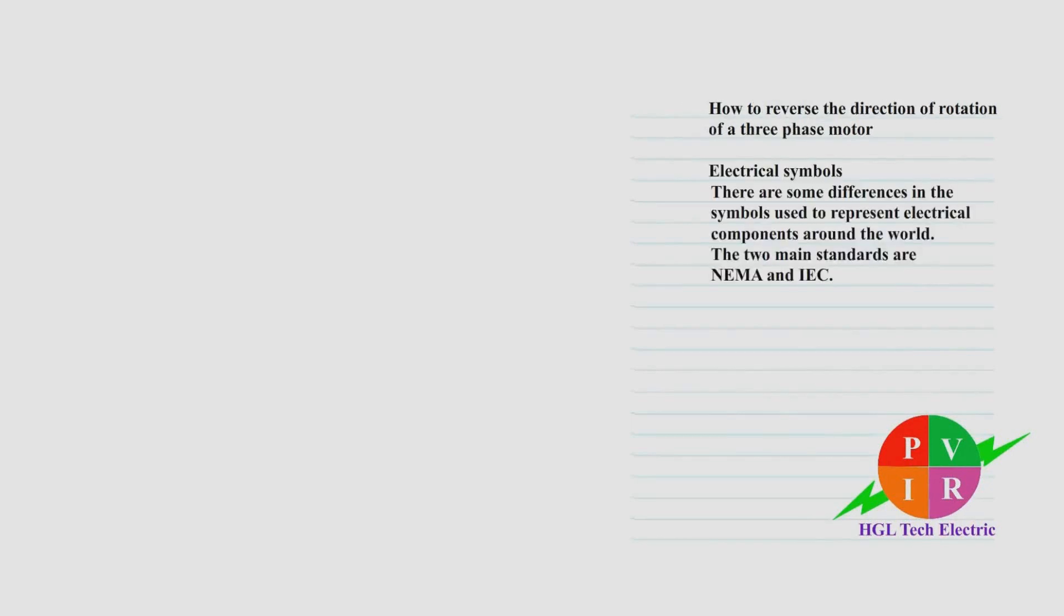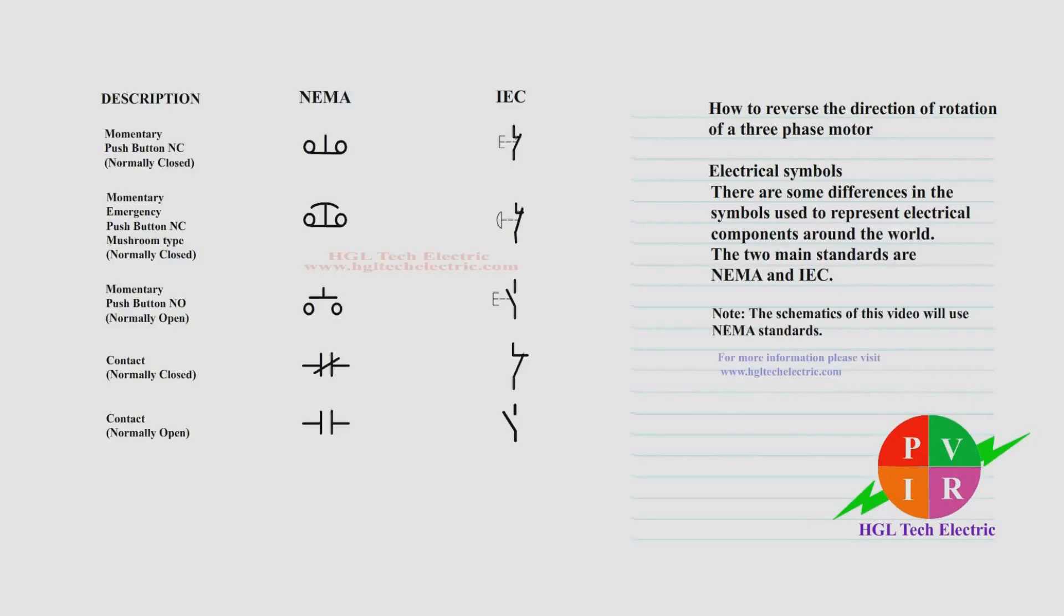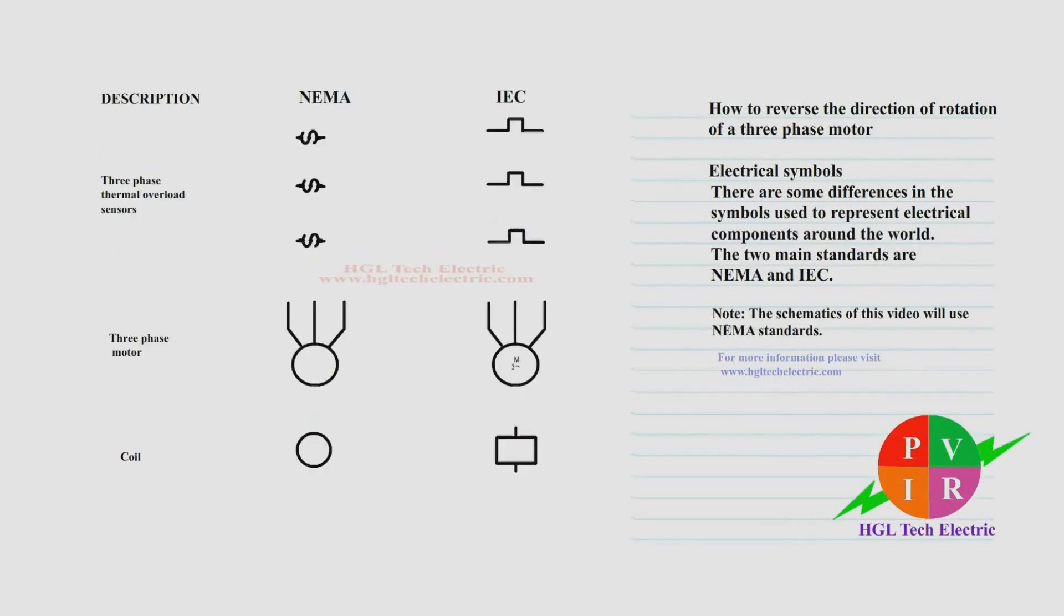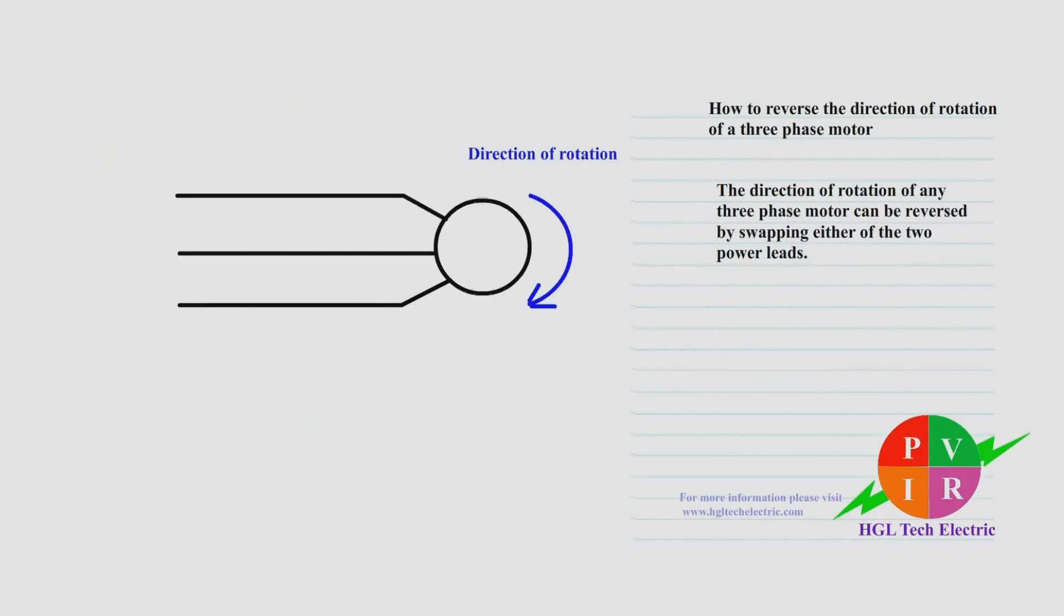There are some differences in the symbols used to represent electrical components around the world. The two main standards are NEMA and IEC. We are going to use NEMA symbols in this video to represent electrical components. The direction of rotation of any three-phase motor can be reversed by swapping any two power leads.